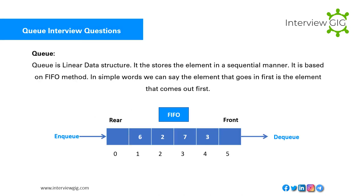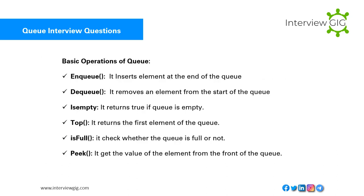Queue interview questions: A queue is a linear data structure that stores elements in a sequential manner. It is based on a FIFO method — the element that goes in first is the element that comes out first. Basic operations of queue: Enqueue — inserts element at the end of the queue; Dequeue — removes an element from the start of the queue; Is Empty — returns true if queue is empty; Top — returns the first element of the queue; Is Full — checks whether the queue is full or not; Peek — gets the value of the element from the front of the queue.